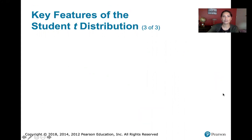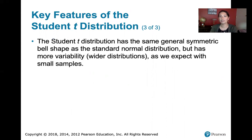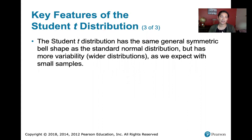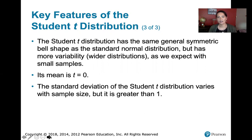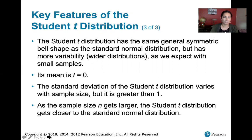The student t distribution has the same general symmetric bell shape as the standard normal distribution, but has more variability — the standard deviation is greater than one. With smaller samples, selecting four values repeatedly will show more variation than selecting 100 values. The mean of the student t distribution is zero, and the standard deviation varies with sample size but is always greater than one. There is less variation the larger the sample, and as the sample size gets larger, the student t distribution gets closer to the standard normal distribution.